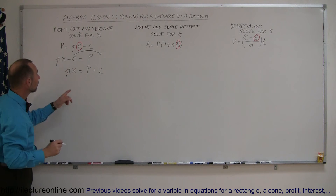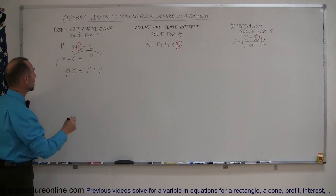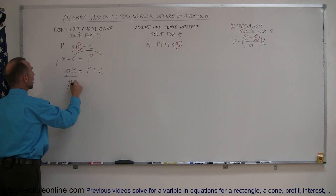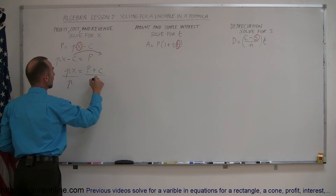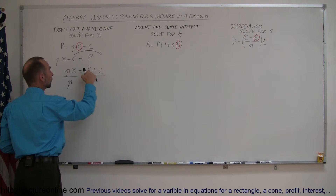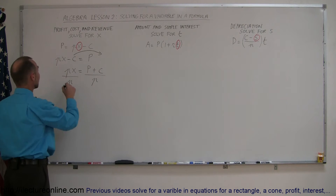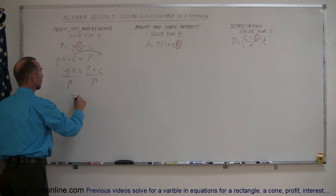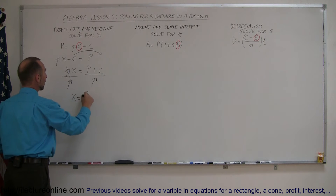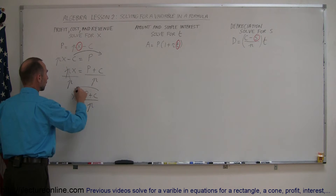So we have p times x equals profit plus the cost. Since we're looking for x, we want to get rid of the p — we divide the left side by p, we divide the right side by p. Now, this is profit and this is price, so they're definitely two different p's. This will cancel out. We have x is equal to profit plus cost divided by the price.